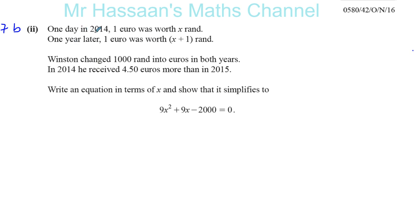It says, one day in 2014, one euro was worth x rand. So one euro was worth x rand. I'll just put up x rand. One year later, one euro was worth, so this is in 2014. In 2015, one year later, one euro was worth x plus one rand.